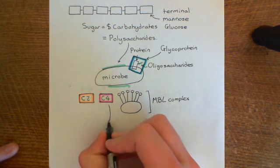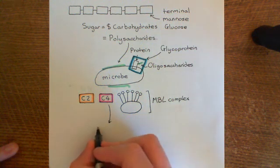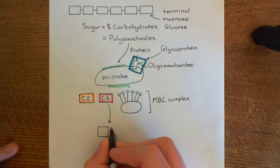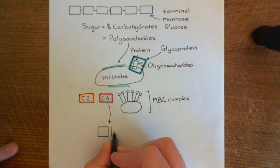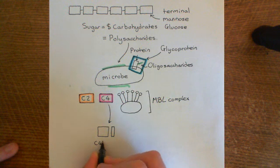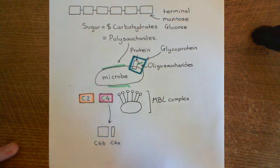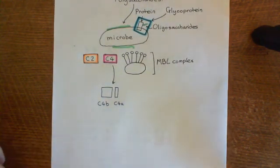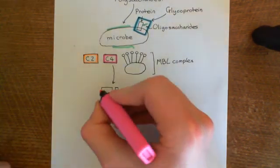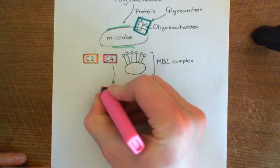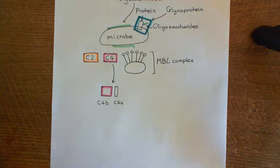We'll start with C4. They're going to break C4 into two fragments: a big fragment known as C4B, and a little fragment known as C4A. C4A doesn't do anything — it just diffuses off. But C4B is extremely important. So ignore C4A; that's just not important.